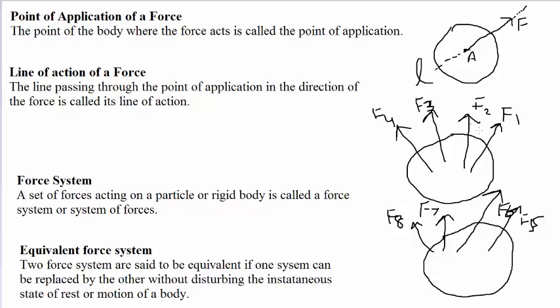Here we have a force system. Now there will be a resultant. That resultant is supposed to be in this direction. If we have different force systems and the resultant is in the same direction with the same magnitude, then we can say that both force systems are equivalent, and there is no difference in the motion and state of the body.